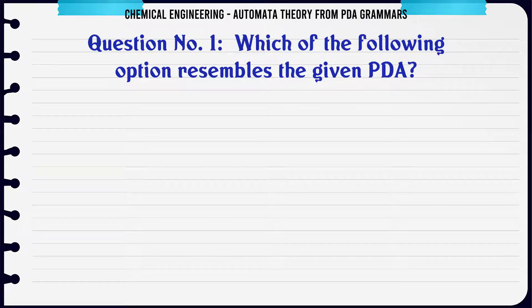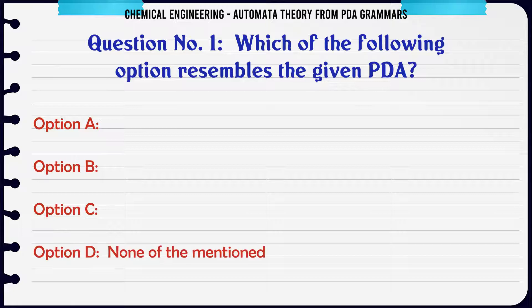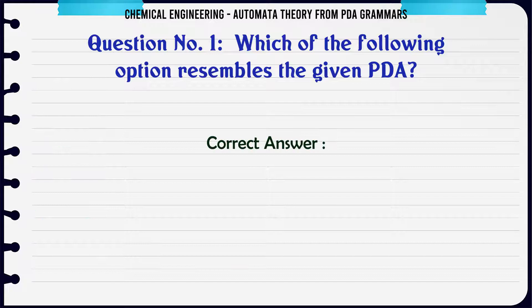Which of the following option resembles the given PDA? Option A: 0 N 1 N N 0. Option B: 0 N 12 N N 0. Option C: 0 2 N 1 N N 0. Option D: None of the mentioned. The correct answer is 0 N 1 N N 0.